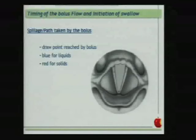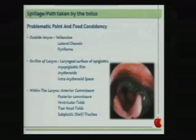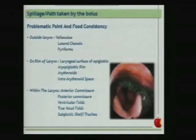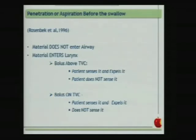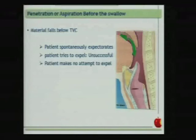We can draw on protocol diagrams the point reached by the bolus on the larynx picture — blue for liquids, red for solids — and note the most problematic consistency where aspiration occurred before swallowing. We document whether material entered the larynx, whether it was above the vocal cords, and whether the patient sensed and expelled it. If aspiration goes below the true vocal cords, we note whether the patient spontaneously expectorates, attempts but cannot expel, or makes no attempt to expel.